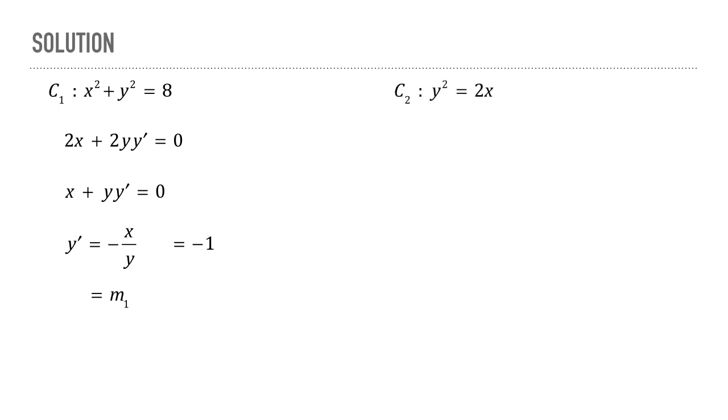For the second curve, we do the same thing. We differentiate both sides with respect to x to get 2yy' = 2, which means y' = 1/y. The point of intersection is (2, 2), therefore y' at this point is equal to 1/2, and let us call this m₂. This is the slope of the tangent to the parabola at the point of intersection.